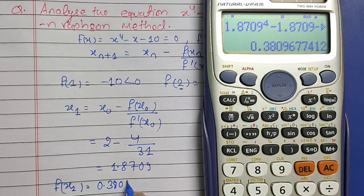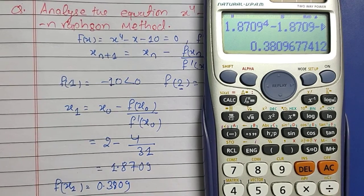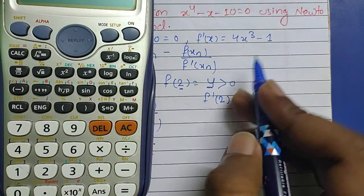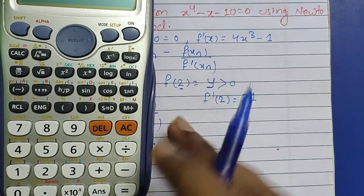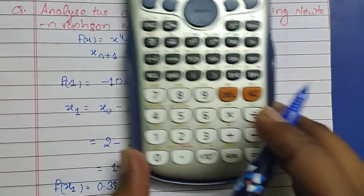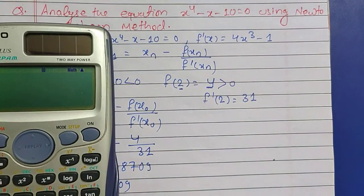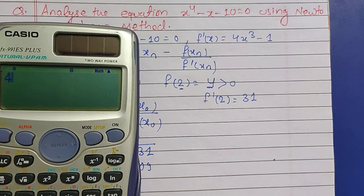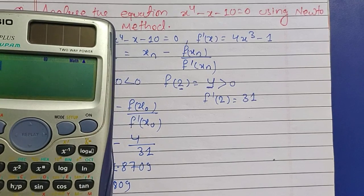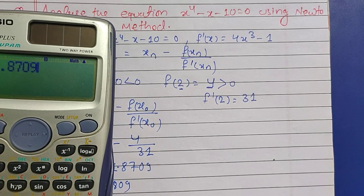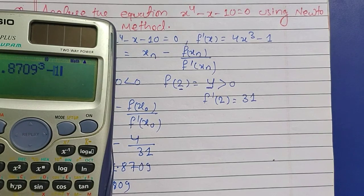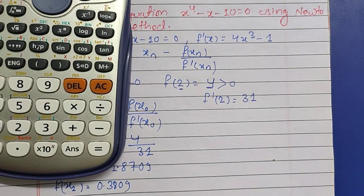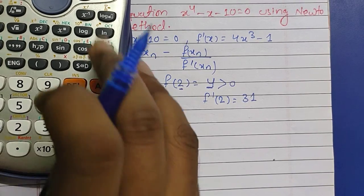f'(x_1) - now for finding f'(x_1), we have to replace x in this equation by 1.8709. So this is going to be 4 × 1.8709^3 - 1.